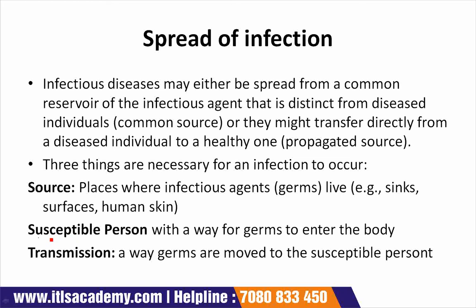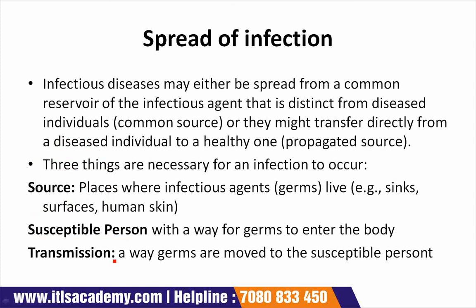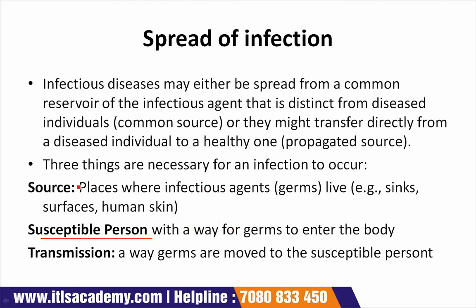The second necessary element is a susceptible person — someone with a pathway for germs to enter the body. Any passage through which germs can enter the body makes a person susceptible, showing their susceptibility to the particular disease caused by that infectious agent.